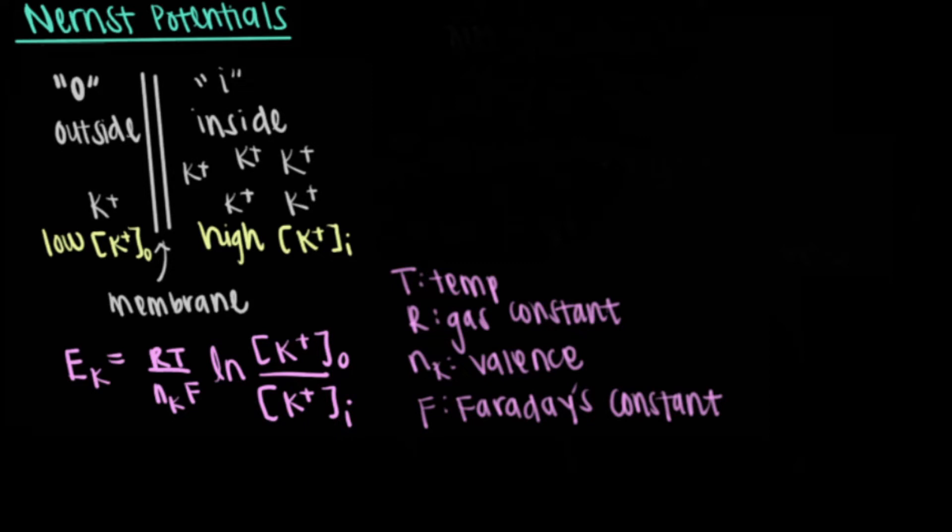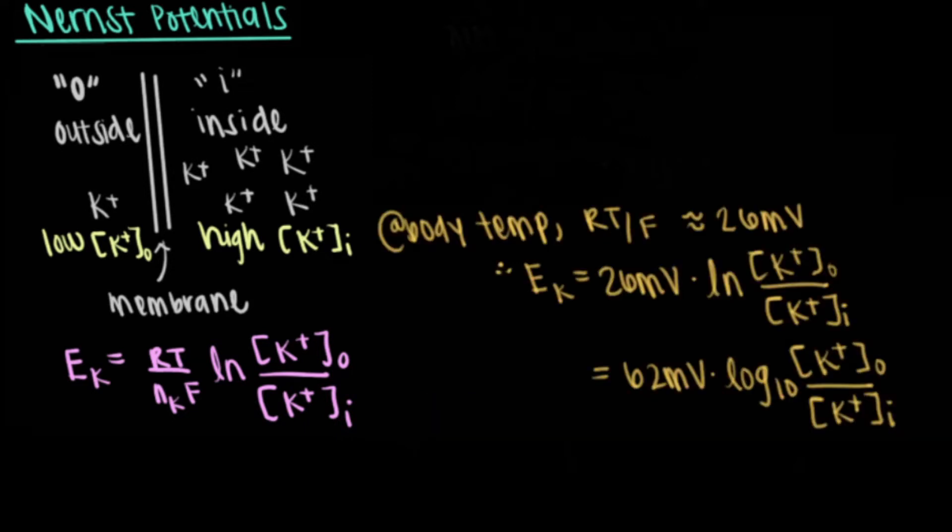At body temperature, RT divided by F can be simplified to 26 millivolts. If we want to take the log rather than the natural log, then the equation becomes EK equals 62 millivolts times log base 10 of the concentration of the potassium ion outside of the cell divided by the ion concentration of potassium inside of the cell.